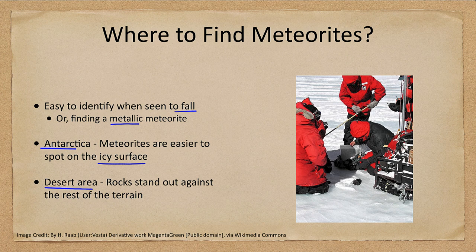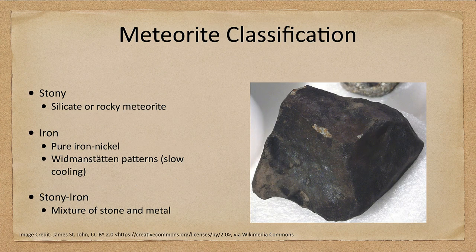We classify meteorites by type. Stony meteorites are made of rocky materials — the same kinds of things that make up ordinary earth rocks — which is what makes them hard to identify on the ground if you happen to see one.